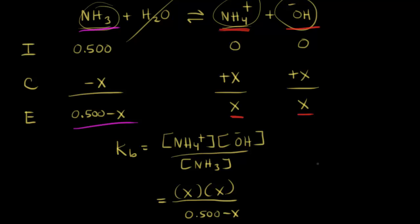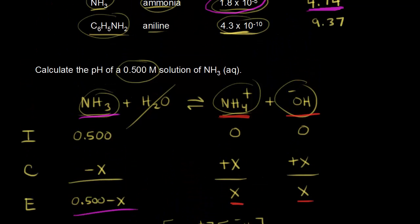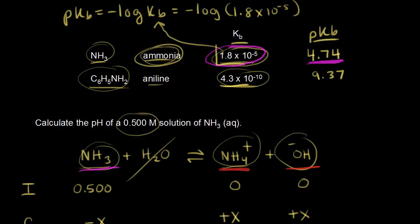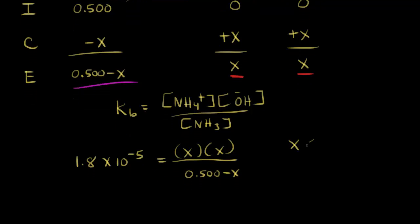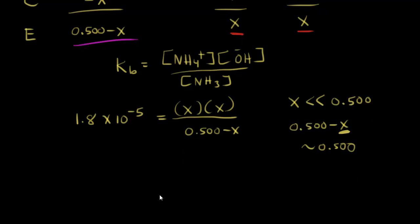The KB for ammonia is 1.8 × 10⁻⁵. We assume X is much smaller than 0.500 M, so we can simplify 0.500 − X ≈ 0.500, avoiding the quadratic formula. The equation becomes: 1.8 × 10⁻⁵ = X² / 0.500.